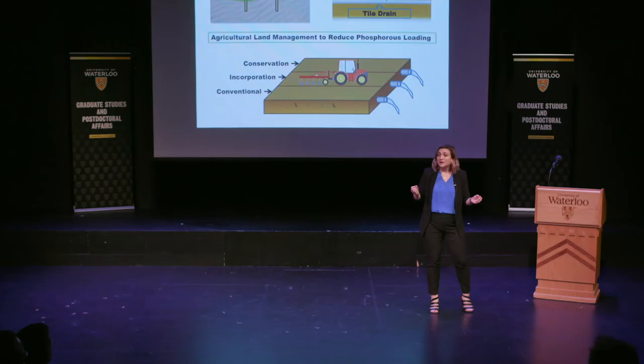Phosphorus can come from multiple sources. However, one that is very difficult to control, because there's no single point to cut it off, is agriculture. Agriculture uses phosphorus in their fertilizer in order to produce crops with good yields, but it can be lost from the system from the surface due to soil erosion, or the subsurface through tile drains, and that's where my research focuses.